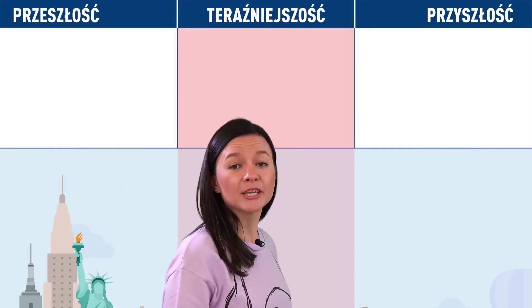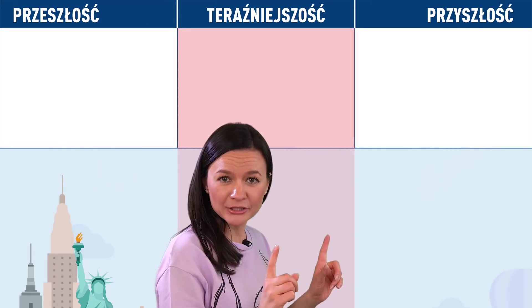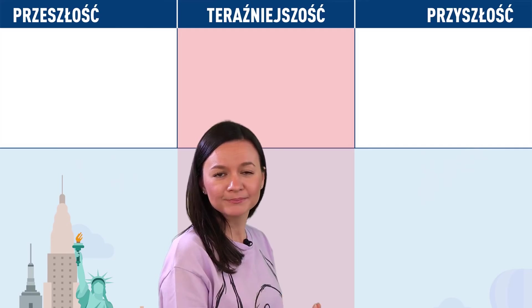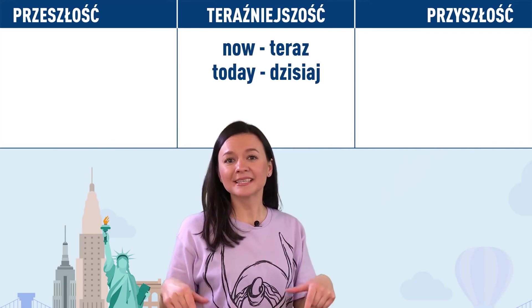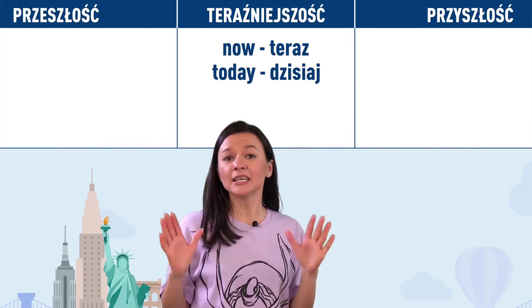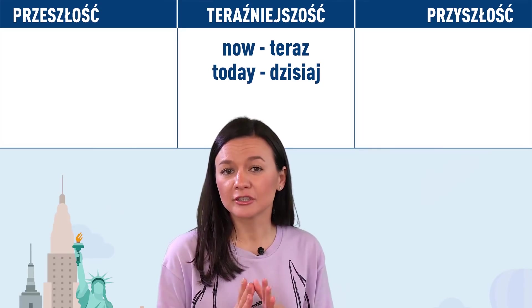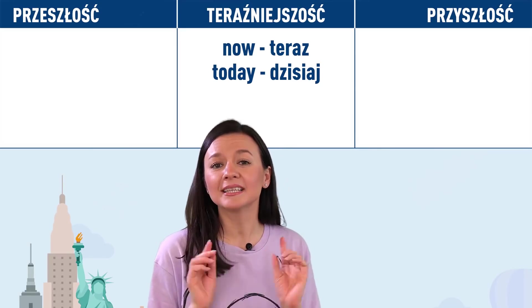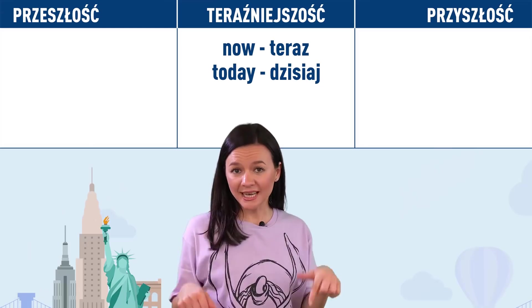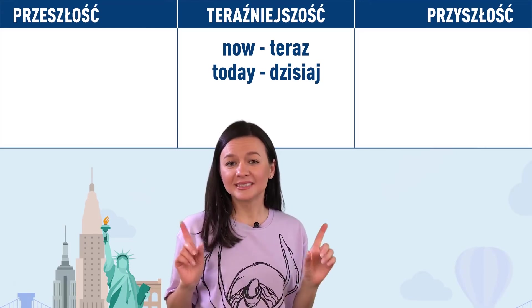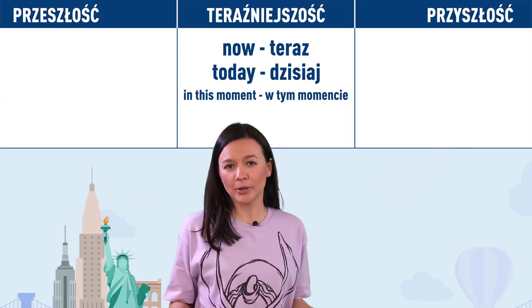Kiedy rozmawiamy o tym, co robimy, dodajemy po polsku takie słówka jak: teraz, dzisiaj, w tym momencie – co po angielsku brzmi: now (teraz), today (dzisiaj). Na pewno wiesz, że te słowa służą do opisania teraźniejszości. Now, today, in this moment.